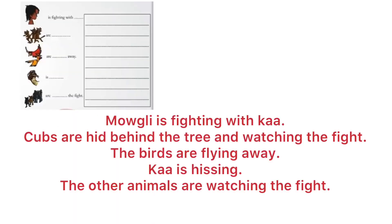In the description: Mowgli is fighting with Ka. Cubs are hiding behind the tree and watch the fight. The birds are flying away. Ka is hissing. The other animals are watching the fight.